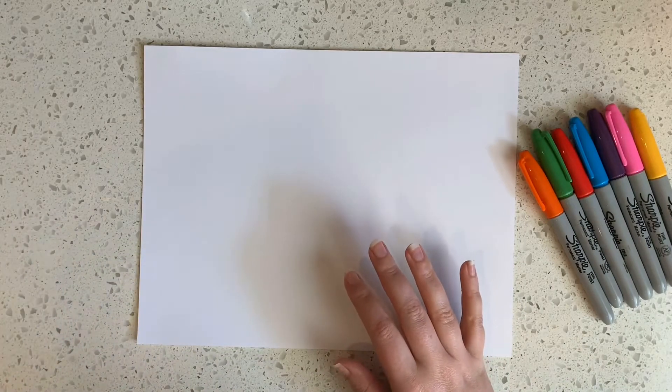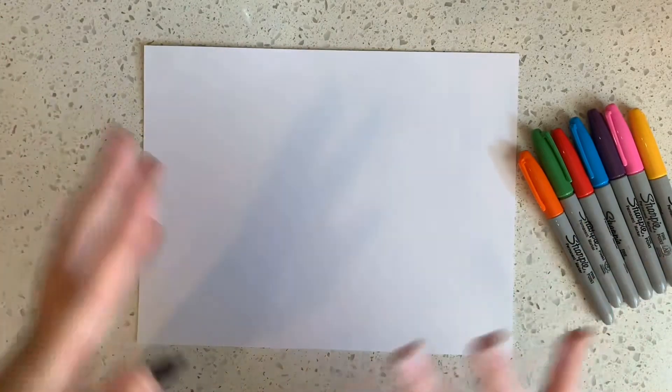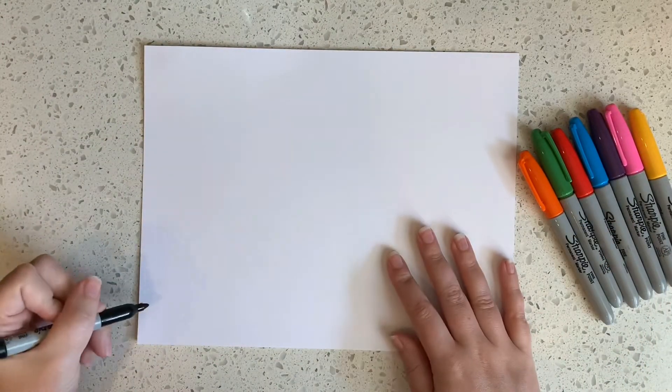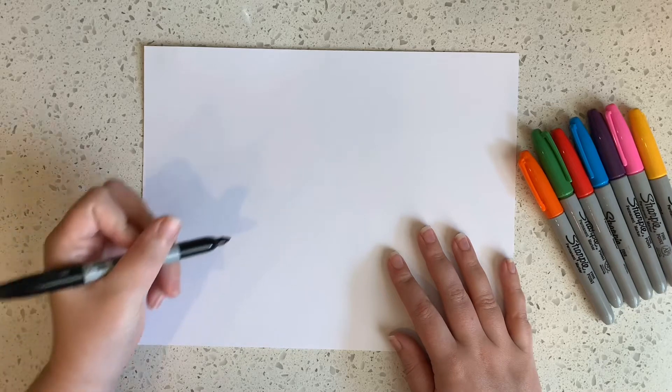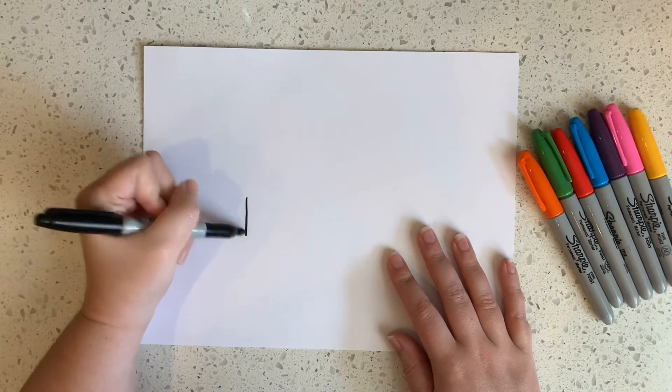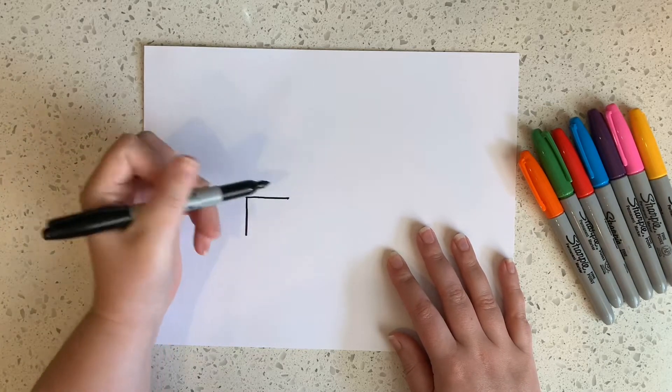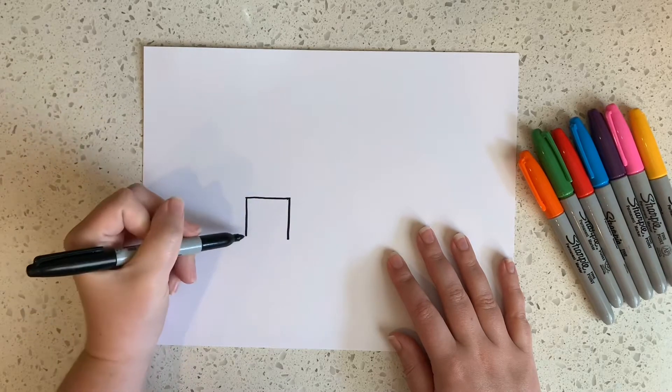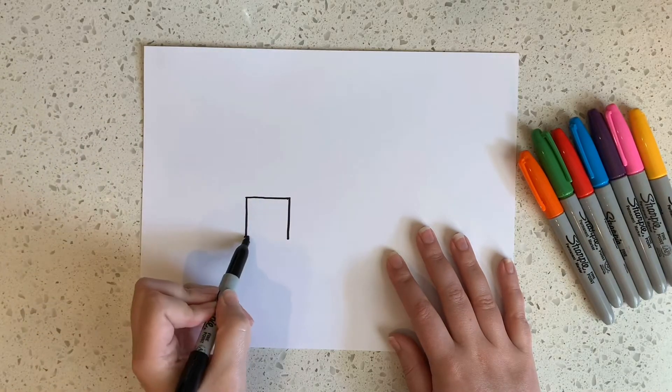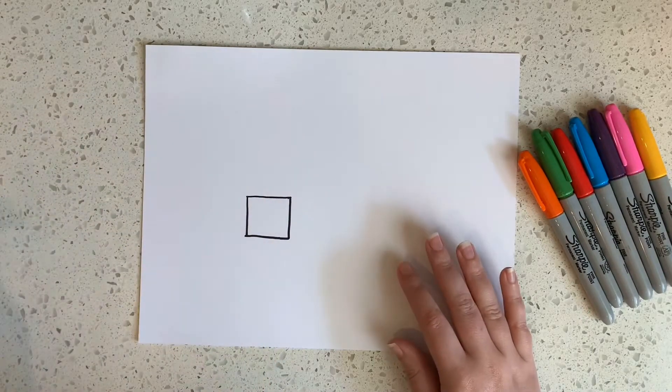So you can make the squares however big or small you want, and they can be all different sizes, and you can kind of see how many you get. I think I'm going to do all different sizes too. It'll be kind of wacky. And start over here. There's my first square.